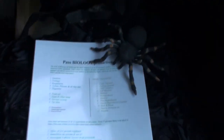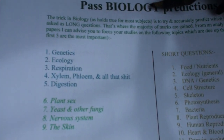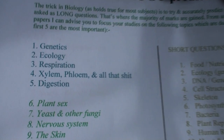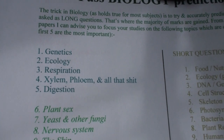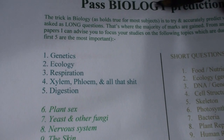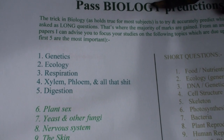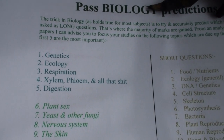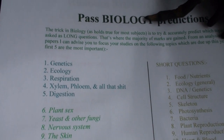So we'll start with the Ordinary Level. For Ordinary Level biology this year, of course you're going to get genetics and ecology for the long questions. Also a big one this year should be respiration. The vascular tissue in plants and transpiration — xylem, phloem and all that. And also digestion. They'd be the big ones for the long questions.